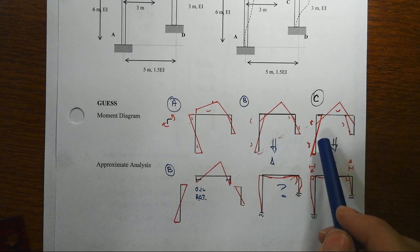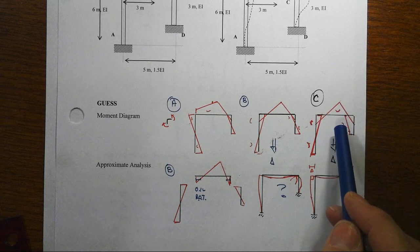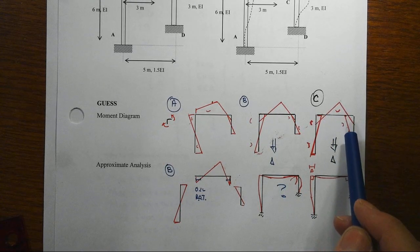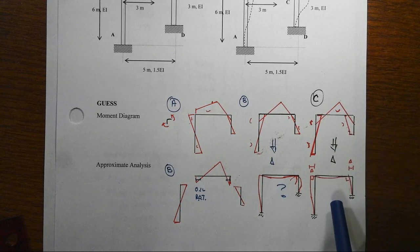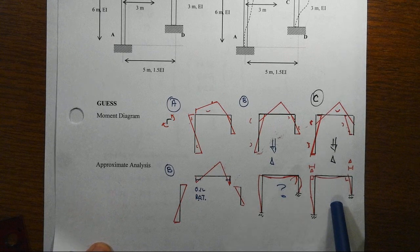If we resolved all this, then we had reverse curvature in the left column, the more typical moment diagram for the beam that we might expect in this kind of case, the right-hand column would have just single curvature, and that all meant that the structure would sway to the left.